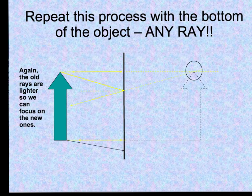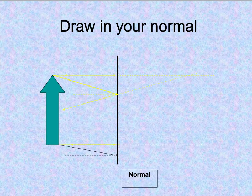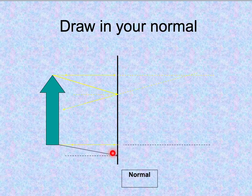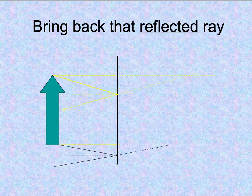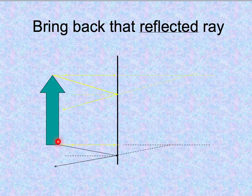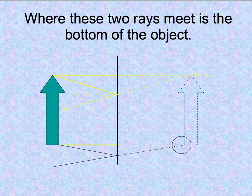So we're going to do that again with the bottom. Pick a ray, any ray. I went down this time just so it didn't get mixed up with these up here. Draw your normal 90 degrees. Draw your reflected ray which this angle will be equal to this angle. So take your protractor and measure those angles. Come out and then bring that back behind the mirror. Where those meet up, that is the bottom of your image.